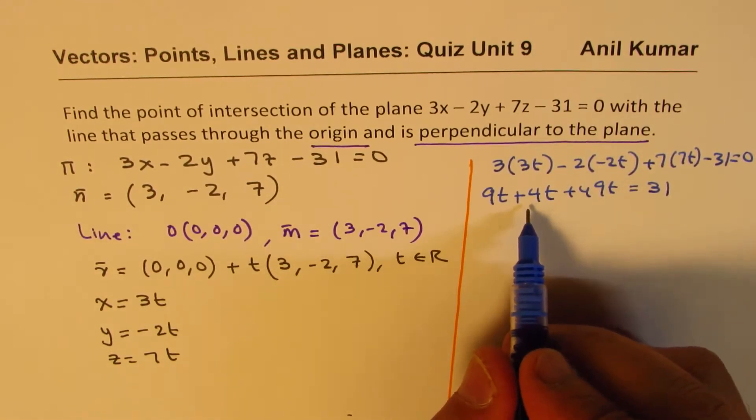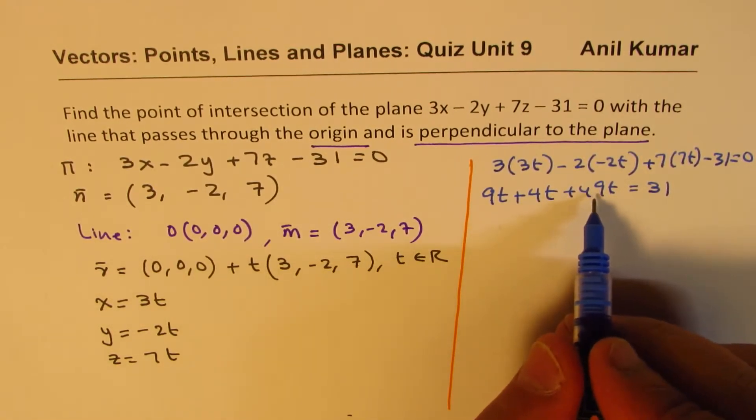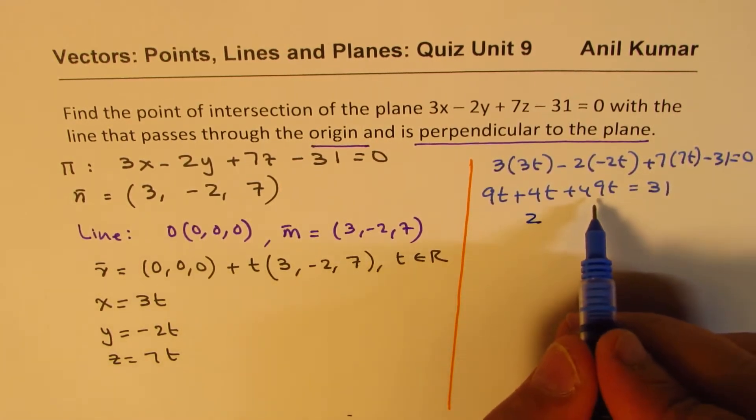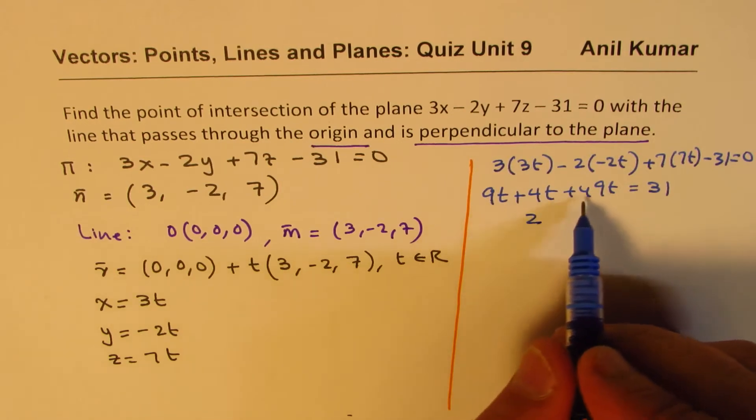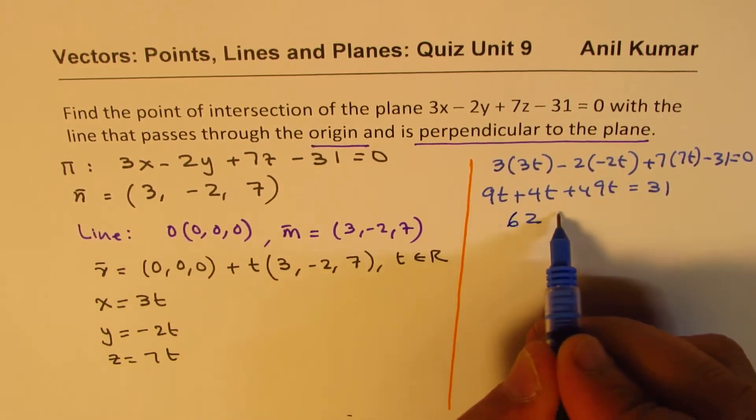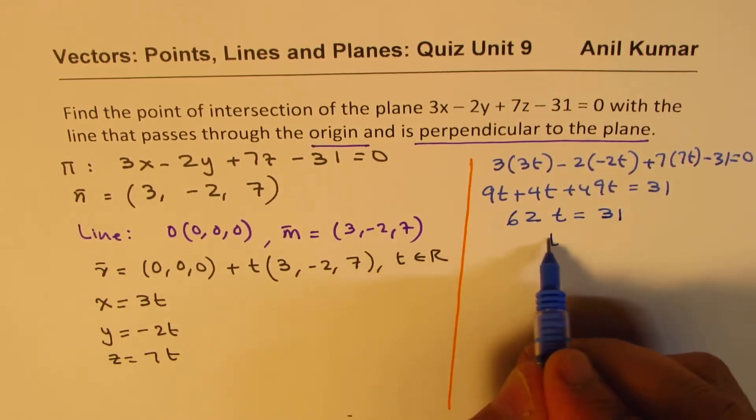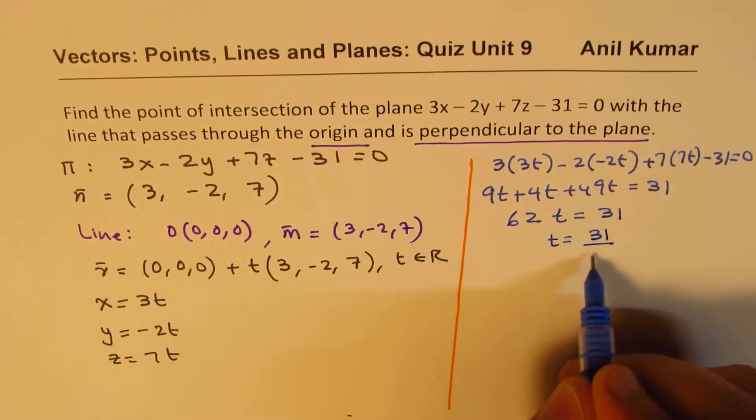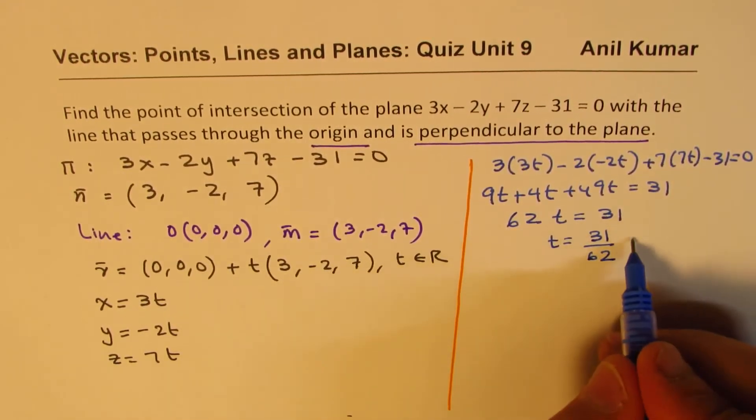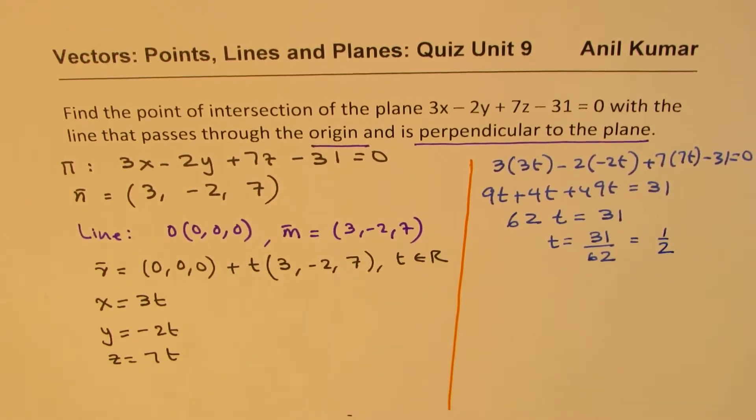So 9 plus 4, 13, and 13 plus 49. So 3 plus 9 is 12, 2, and then 2 plus 4, 6. 62t equals to 31. So that means t equals to 31 over 62, which is basically half. So we get t as half.